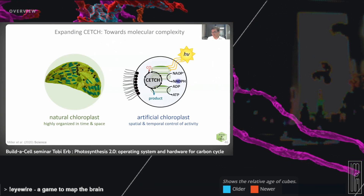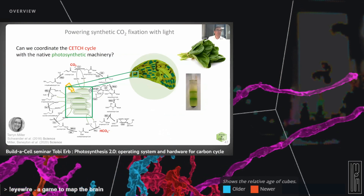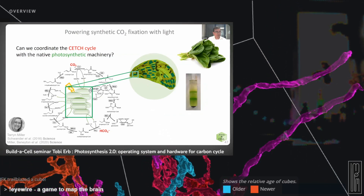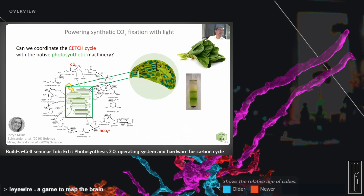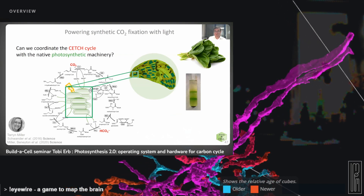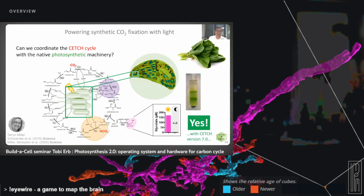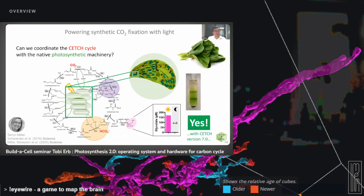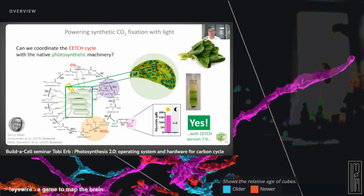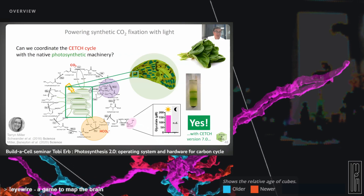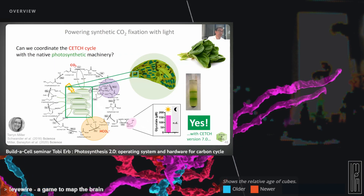One question we asked ourselves: can we mimic and control CO2 fixation in time and space, instead of a soup of enzymes in an Eppendorf tube? Can we use light to power the CETCH cycle — bring together the synthetic cycle we built with photosynthetic membranes that would provide ATP and NADPH? First step: isolate thylakoid membranes from spinach, put them together with the CETCH cycle. Surprise — the system did not work initially. We had to optimize it, swap two enzymes, and then we could run the CETCH cycle together with natural photosynthetic machinery.